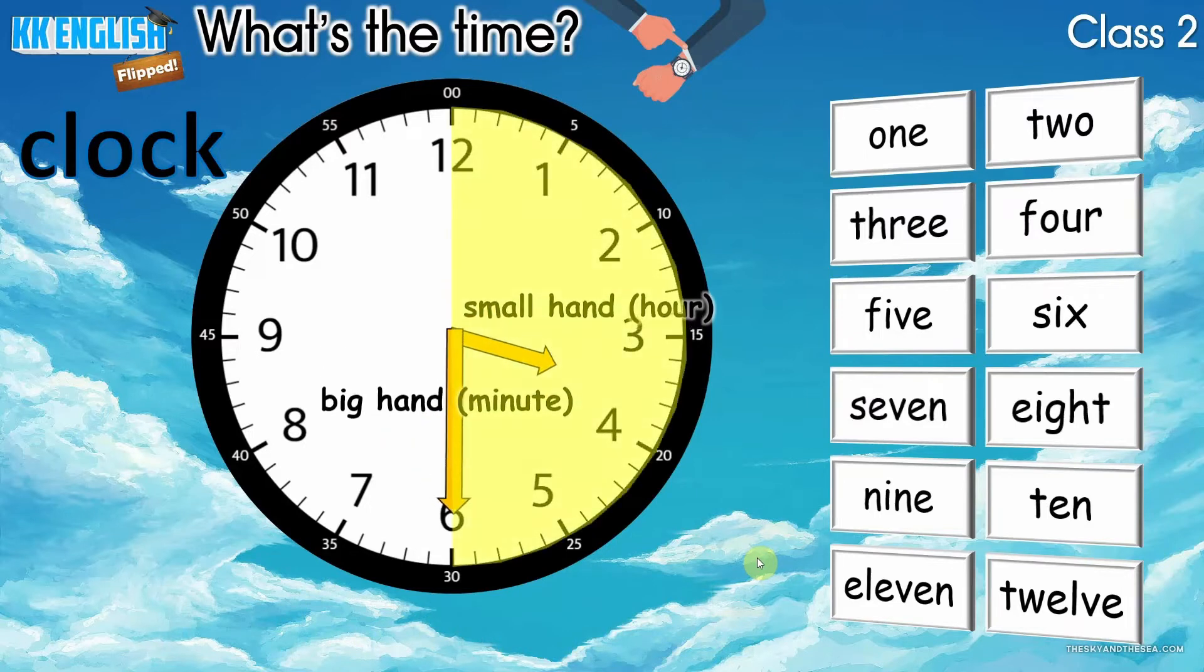Now, look at this clock. 现在我们来看一下这个时钟. Look at the yellow part. 我们来看一下黄色这个部分. What is this? 什么意思呢? Yes, look at the big hand. 看看这个分针. 它刚刚从12的号码转一半,转到了6. So, 30 minutes has passed. 那30分钟已经过去了. So, what is the time? 现在就是几点呢?